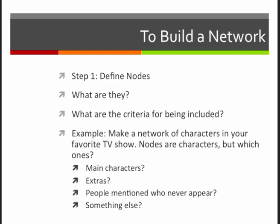So let's talk about building a network. I'd like you to follow along with an example on page 120 of the book, which has you think about building a network of a TV show. So think of your favorite show, and I'm going to ask you to build a network of that show. Step one is going to be to define the nodes. What are they, and what are the criteria for being included? So if we think about this example, a network of characters in your favorite TV show, which characters get included as nodes? Is it just the main characters? Is it extras? You know, the people walking around in the coffee shop who don't have a name? Is it people who are mentioned but never appear? Could they be a character? Is it something besides that?